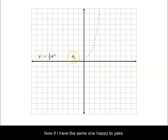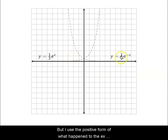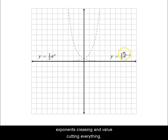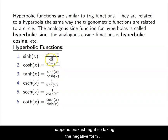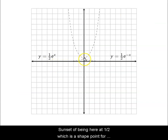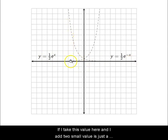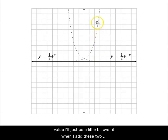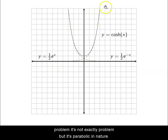For cosh, instead of taking the negative form, we add one half e to the x and one half e to the negative x together. The shared point becomes 1 instead of one half. Adding a large value and a small value gives something slightly over, so the cosh function is very similar to a parabola — parabolic in nature but not exactly a parabola.